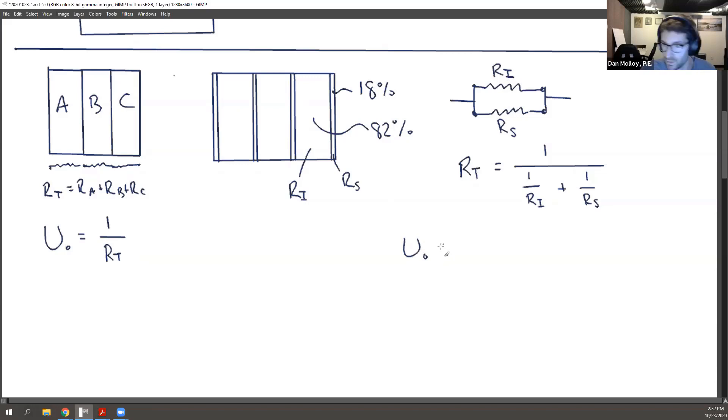Why not define U, not overall, U for the insulation only as being the reciprocal of one over the resistance for the insulation? That's certainly true, right? And then there could be a heat transfer coefficient for the studs, which would be the reciprocal of the resistance for the studs. And then these would have units that the coefficient of heat transfer normally has.